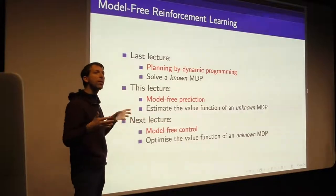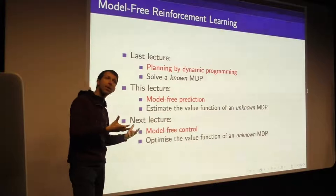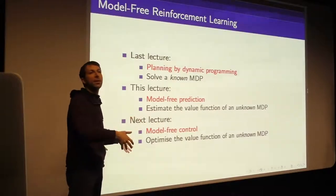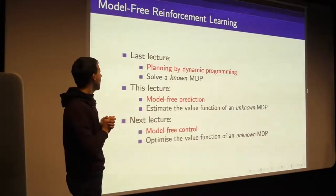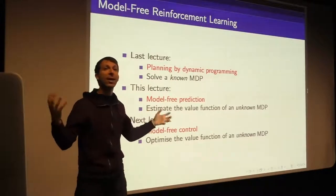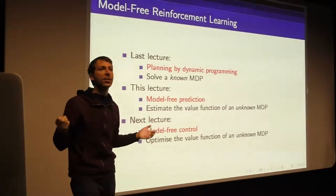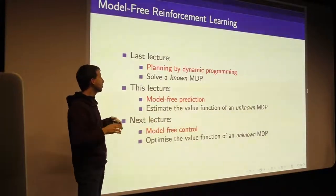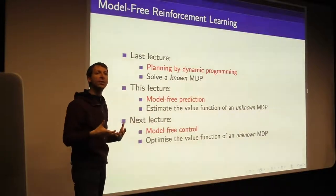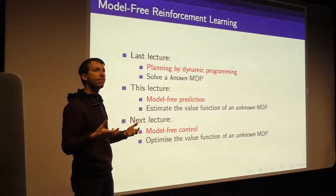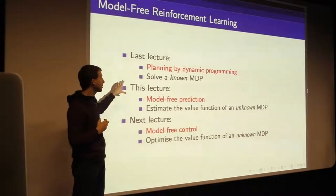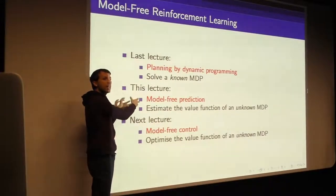Last lecture we broke the problem into two pieces: first using dynamic programming to evaluate a policy, and then using that as an inner loop to find the optimal policy. With model-free methods we do something similar, but we give up the assumption that someone tells us how the environment works — which is unrealistic for most interesting problems. Instead, model-free methods go directly from the agent's interactions with its environment to a value function and hence a policy.